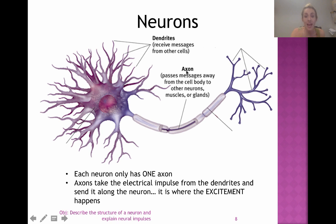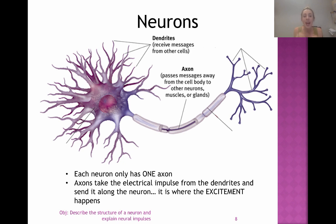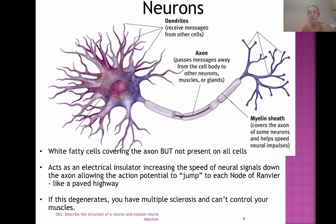The next thing to know is the axon. The axon takes the message from the cell body to the other end of the neuron — it sends the message away from the cell body so it can be passed on to another neuron. Each neuron only has one axon. Axons can be short or long depending on where the neuron is in your body and what its function is. Axons carry the electrical impulse away from the dendrite.